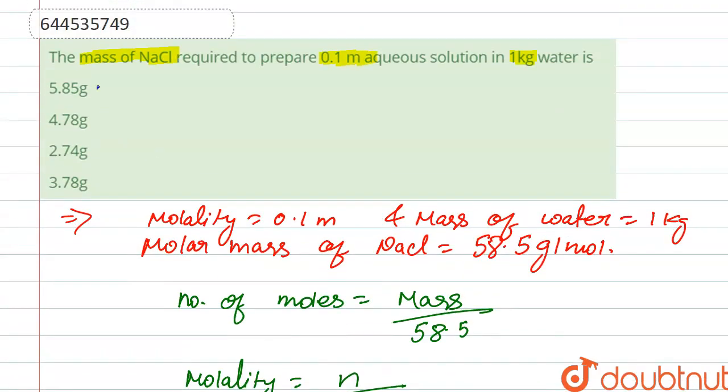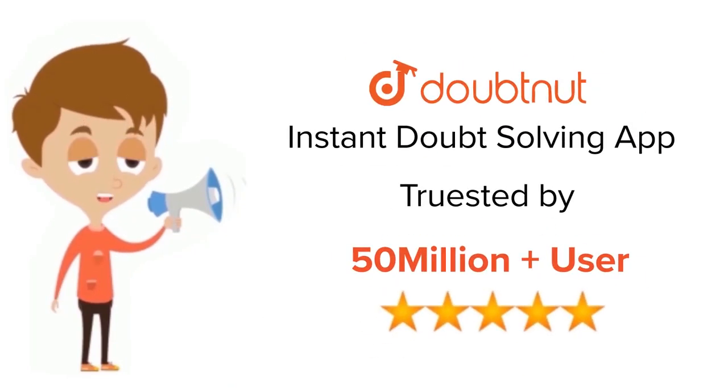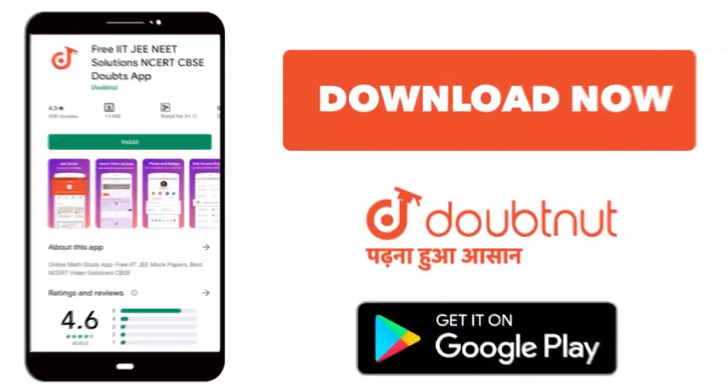So our correct option is option first. Thank you. For class 6th to 12th, IIT-JEE and NEET level, trusted by more than 5 crore students. Download Doubtnut today.